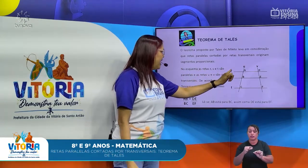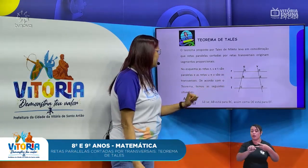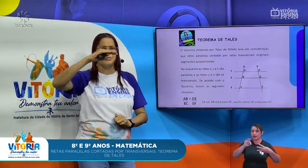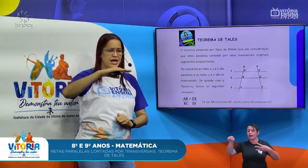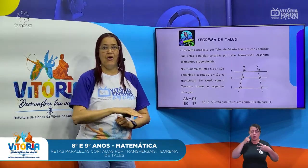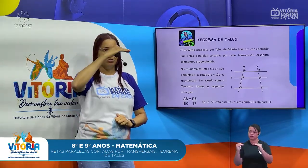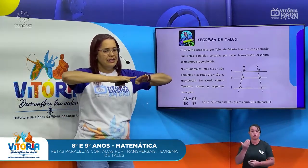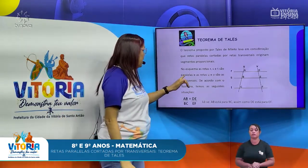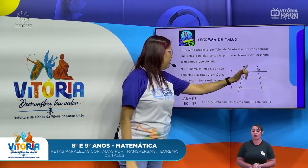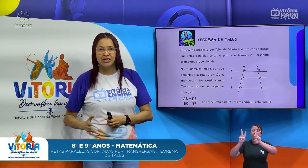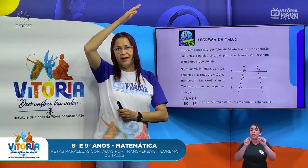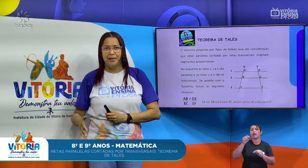No esquema ao lado, as retas R, S e T são paralelas — uma está paralela à outra, ou seja, seguem o mesmo padrão. E as retas U e V são transversais, que cortam o feixe de retas paralelas de forma transversal.